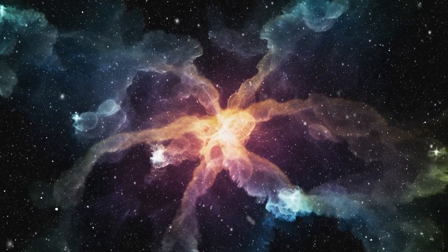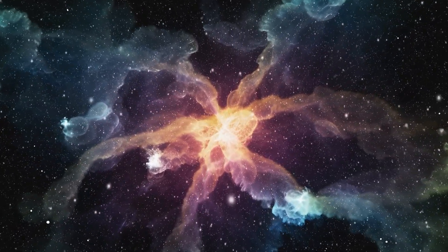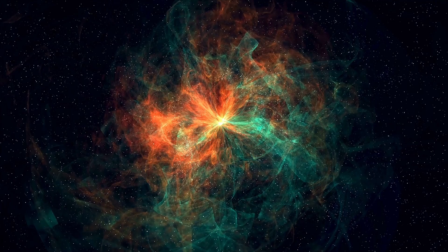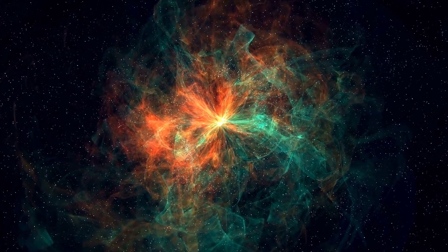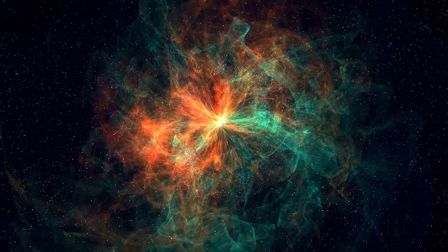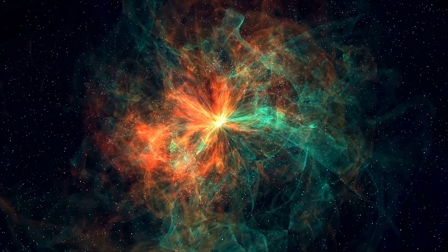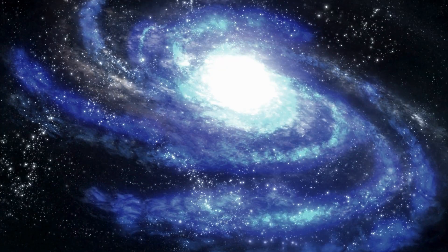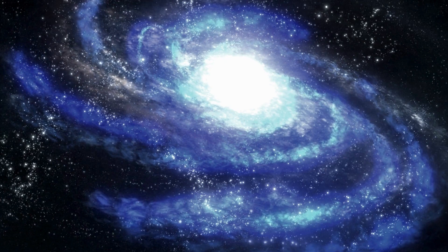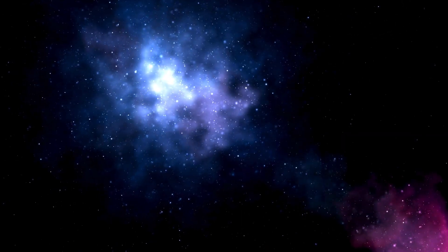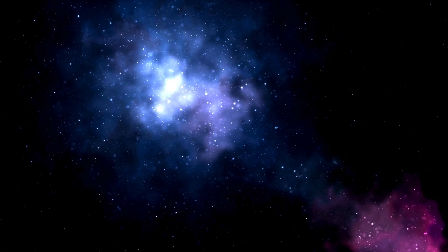However, other scientists believe Betelgeuse is still in the early part of its evolution. According to this perspective, the star has several millennia left before it exhausts its fuel and undergoes a supernova. This viewpoint is based on models of stellar evolution that consider the complex processes within Betelgeuse's core. These models suggest that Betelgeuse might still be burning helium, delaying its transformation into a supernova by thousands of years.